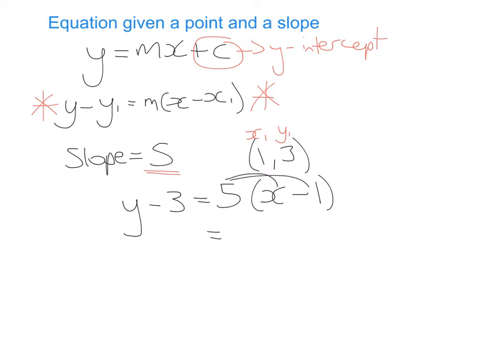And to finish this off, you just need to multiply your 5 by everything in the bracket. So that's going to give you 5x minus 5. And on the left, you're left with y minus 3. And just to make this look a little bit neater, I'm going to turn it into the form y equals mx plus c. So I'm going to get rid of the minus 3 by adding 3 to both sides. So I'm going to be left with y equals 5x minus 2.